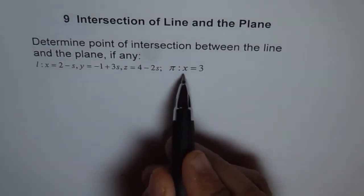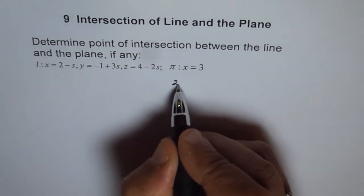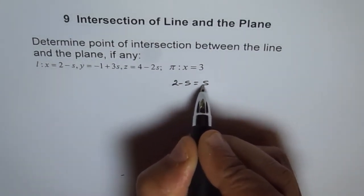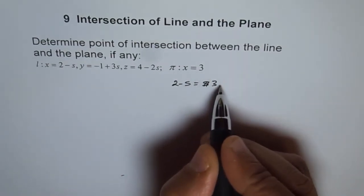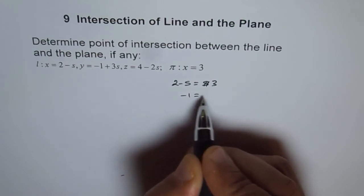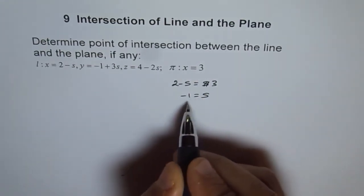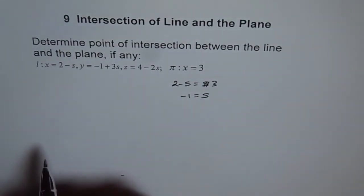The plane is x equals 3, and x is 2 minus s. So we can say 2 minus s equals 3, and s equals - we'll take s on this side and 3 on this side - so we get minus 1 equals s. Since s is minus 1, we can plug in minus 1 here and get our points.